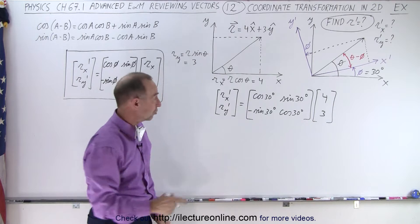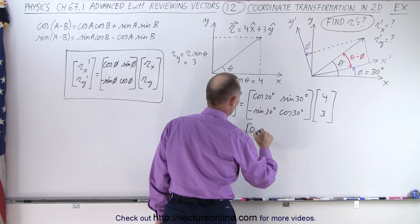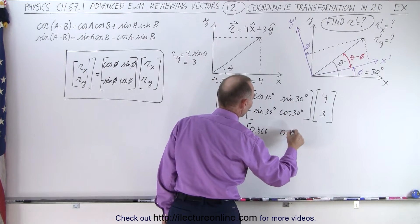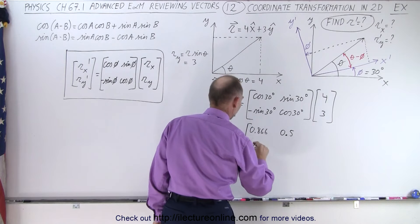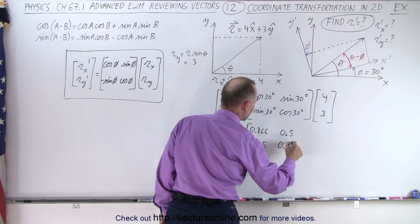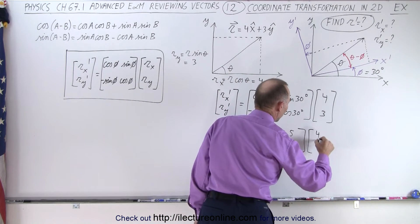All right, now we can change this. We can say this is equal to the cosine of 30 degrees is 0.866, the sine of 30 is 1 half, this negative 1 half over here and here we have 0.866 multiplied times 4 and 3.